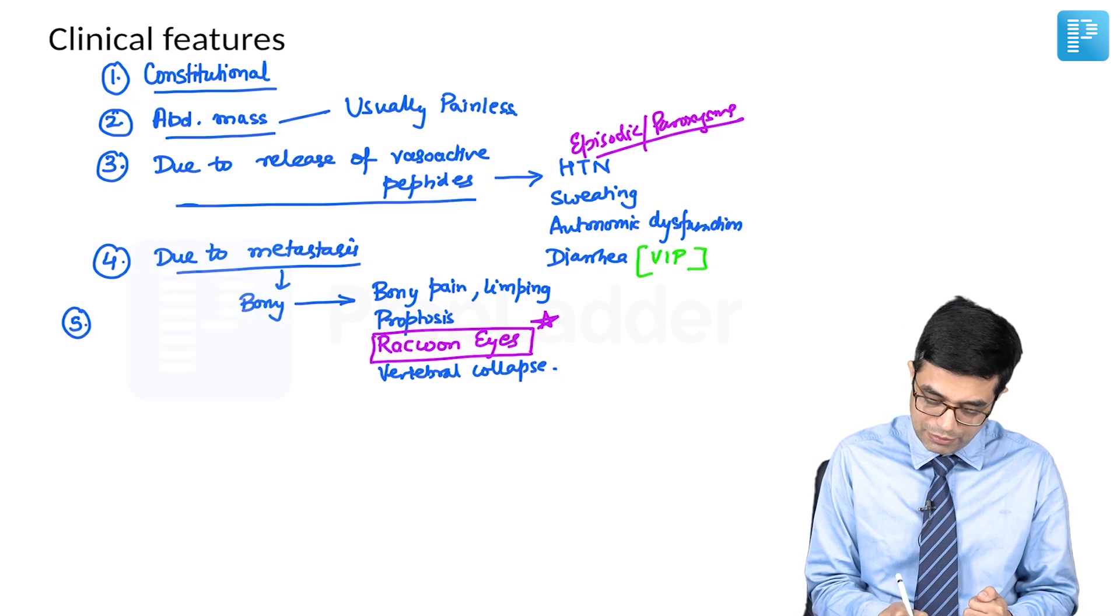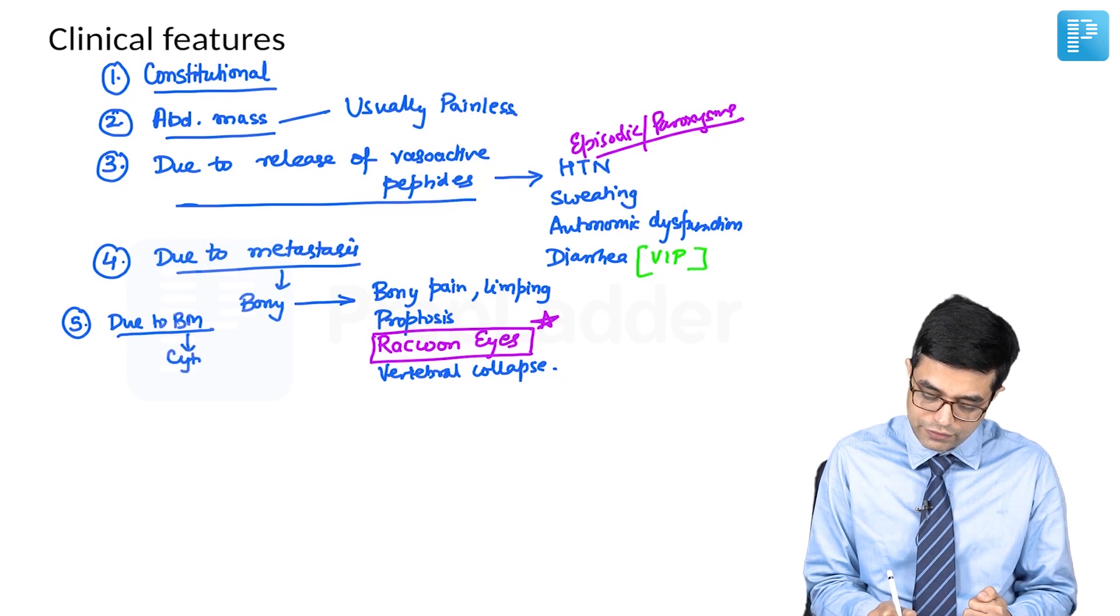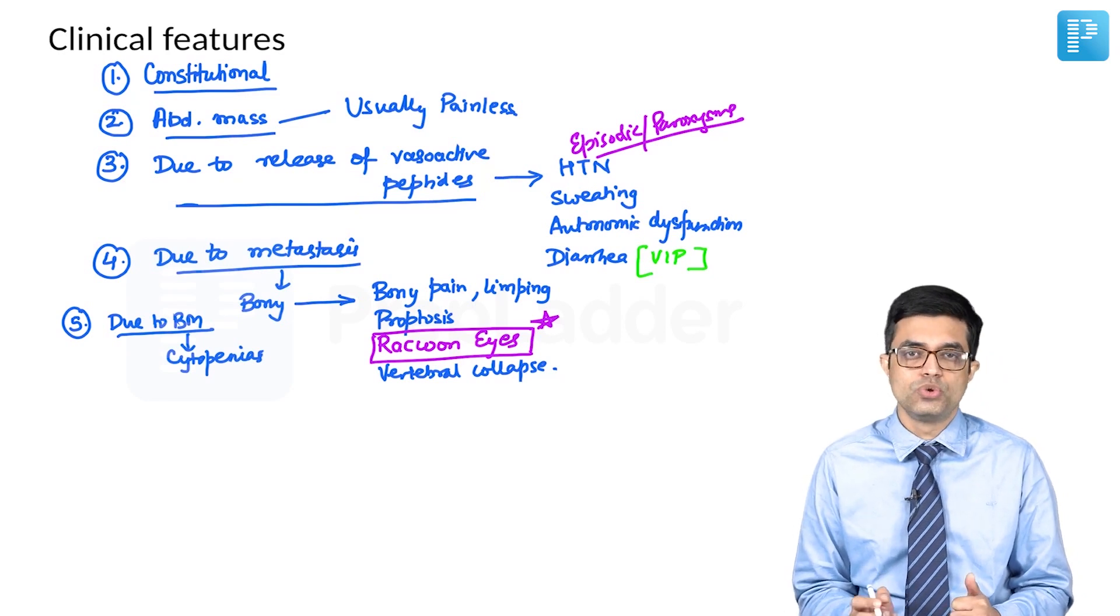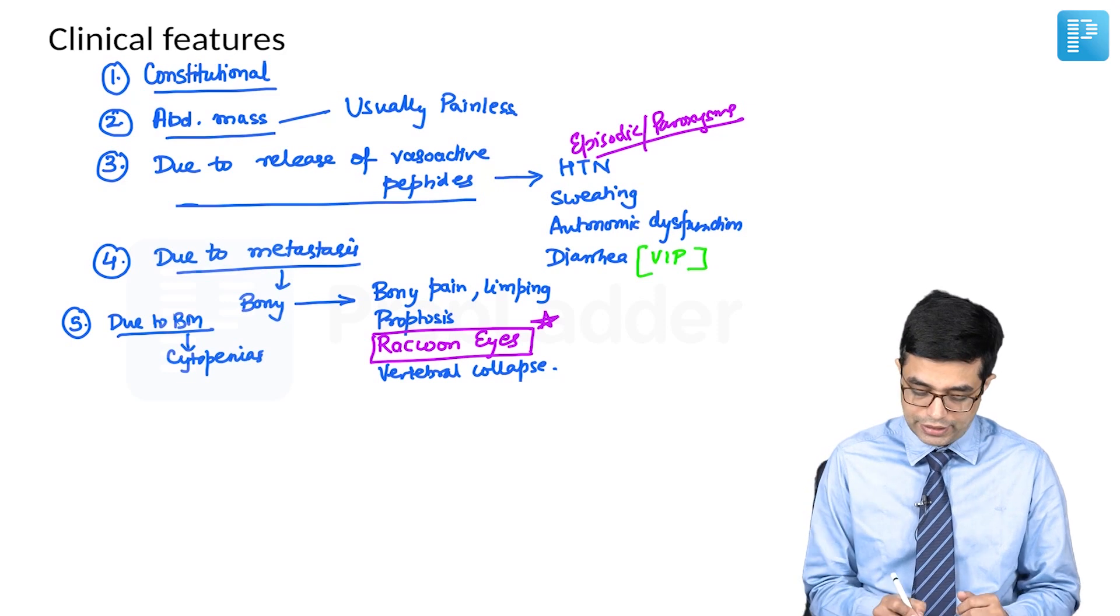Fifth clinical feature: they may be due to bone marrow involvement. When bone marrow involvement occurs, then features of cytopenias, anemia, neutropenia, and thrombocytopenia may be seen, but usually they are relatively late presentations compared to the other findings. And sixth,